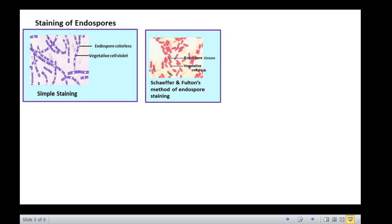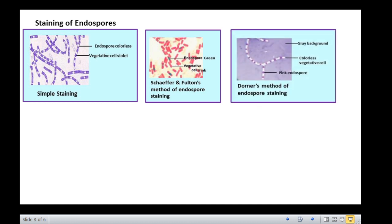Yet another alternative method of staining is Dorner's method, where carbolfuchsin is the primary stain and the counter-stain is an acidic stain, nigrosin. As a result, the endospores appear pink, vegetative cells appear colorless, and background appears gray.